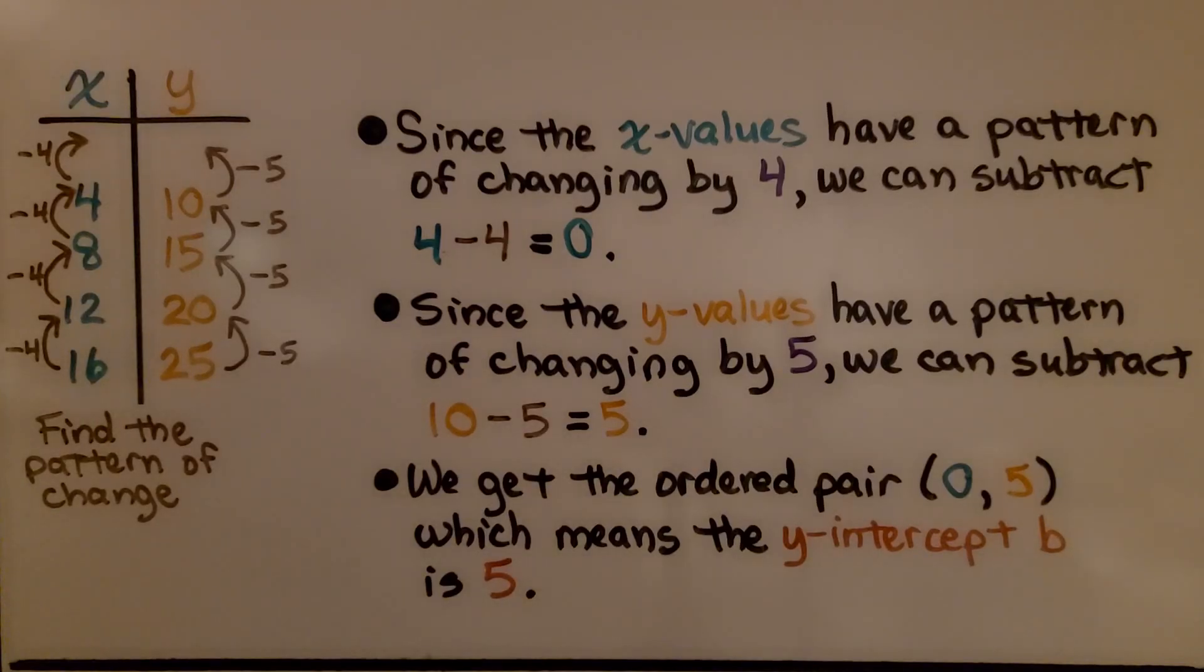We can find it for this table of values. We look at the x values and see, working backwards, we have minus 4, minus 4, minus 4. So if we have 4 and take away 4, we're going to have 0 for x. We look at the pattern of change for the y values, and it's going minus 5, minus 5, minus 5. If we do minus 5 again, we have 10 minus 5, that's 5.